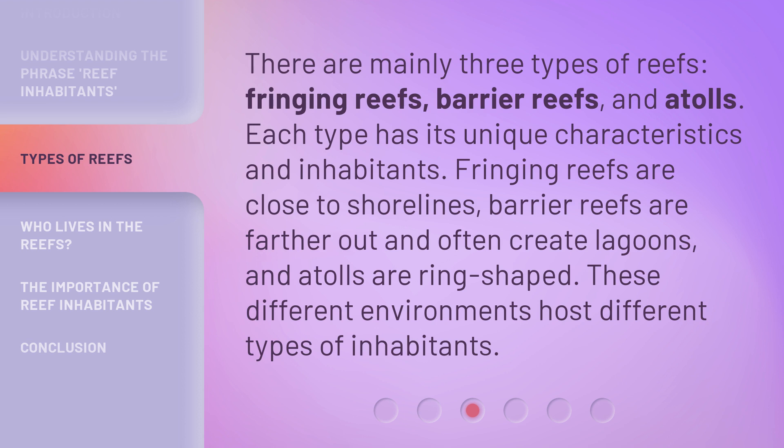Fringing reefs are close to shorelines. Barrier reefs are farther out and often create lagoons, and atolls are ring-shaped. These different environments host different types of inhabitants.